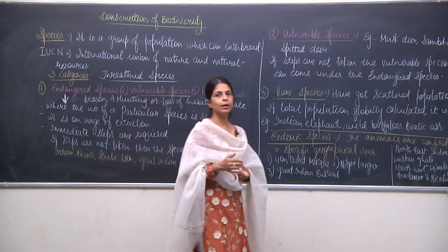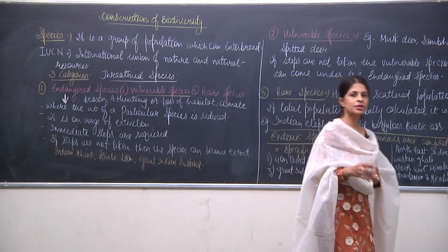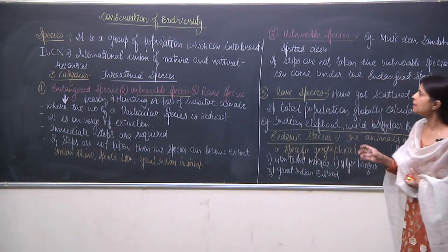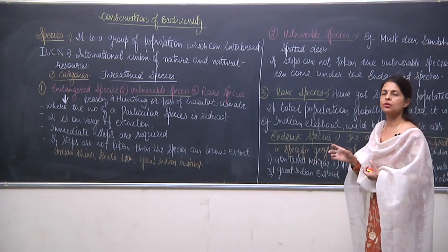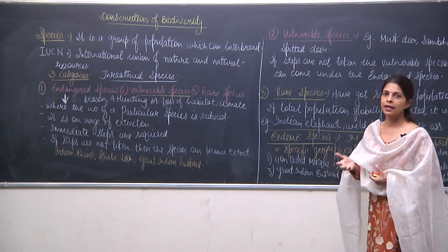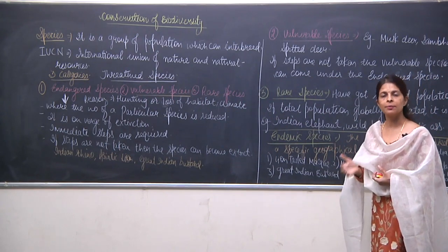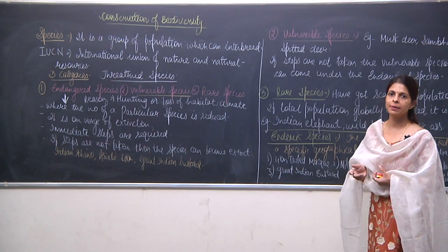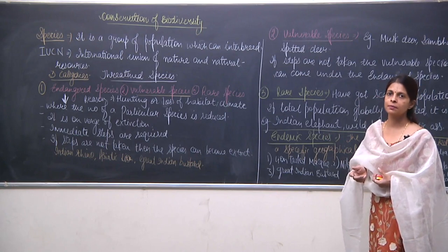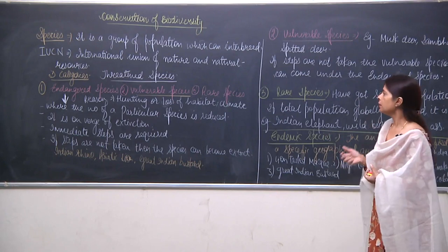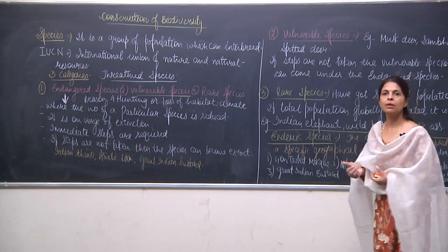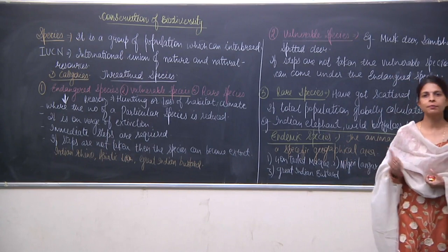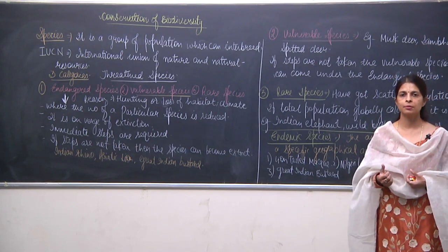To summarize: a species is a group of population which can interbreed and can reproduce. We have discussed the division made by IUCN. Now we will talk about a few more points — please note these.